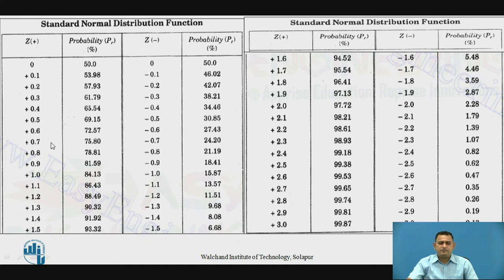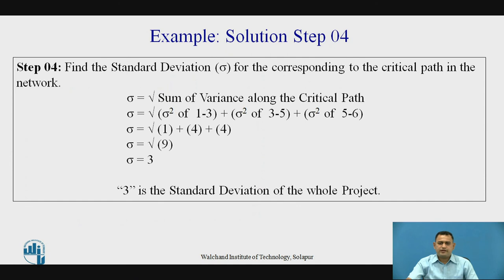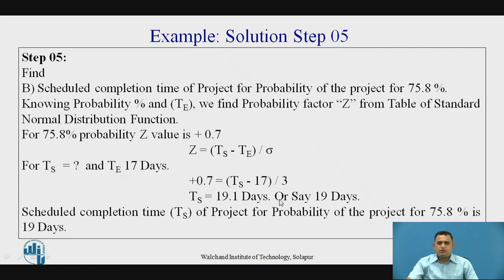Previously we found probability from the Z value; here we find Z from the percentage. With Z = 0.7, we place the values of Z, Te, and the standard deviation into the formula to get the scheduled completion time Ts. By substituting all values, Ts = 19.1 days, or approximately 19 days. So the scheduled completion time for a probability of 75.8 percent is 19 days.